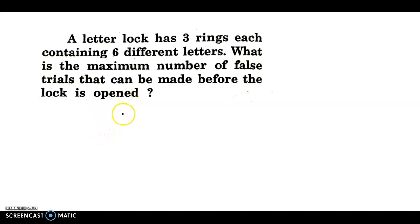So here is a letter lock which has three rings. Suppose this is our first ring, say this is R1. This is the second ring, say that is R2. And this is the third ring, say R3.